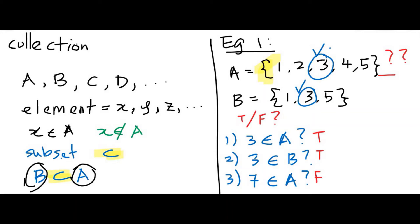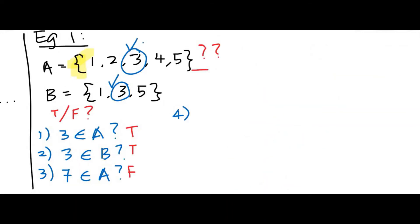Moving on to question four: is B a subset of A? Remember, whatever that contains in B must contain in A. B has 1, A has 1. B has 3, A has 3. B has 5, A has 5. Yes, because whatever B has, A has. Therefore B is a subset of A and it is true.